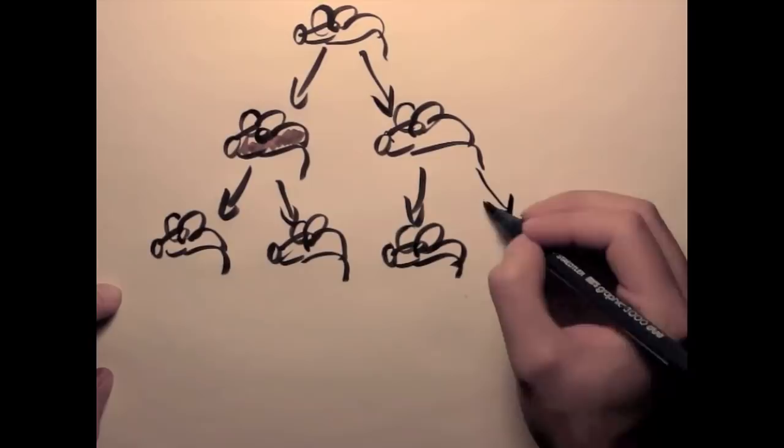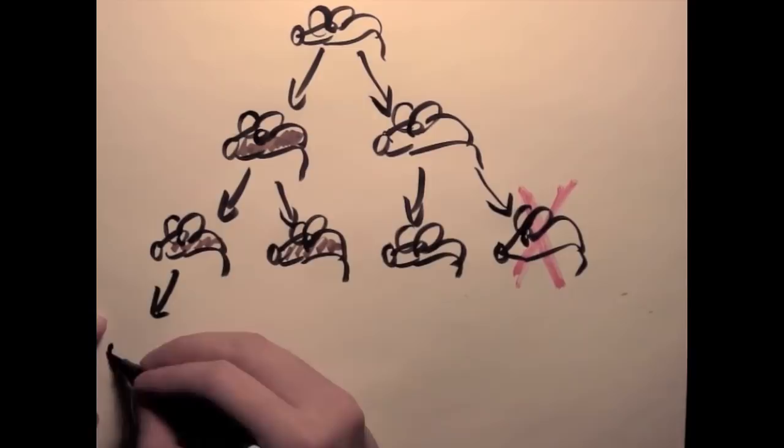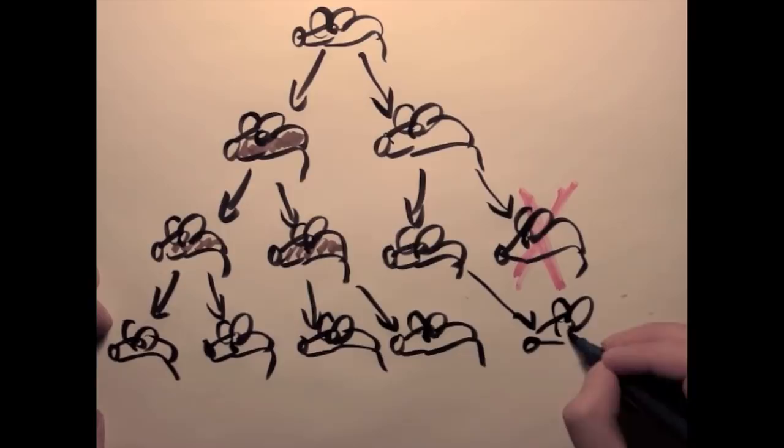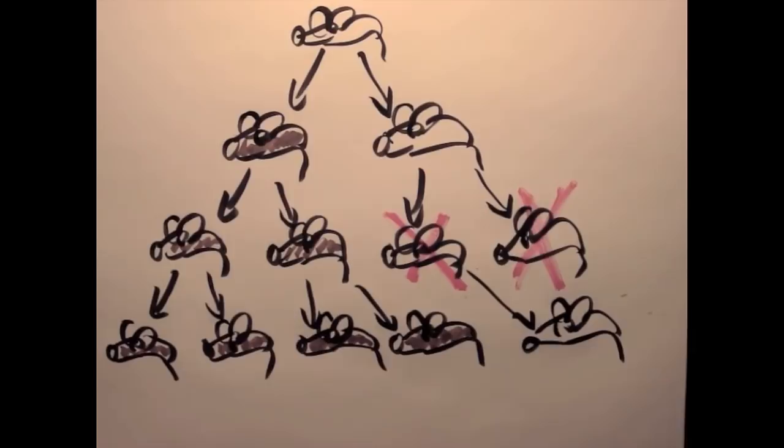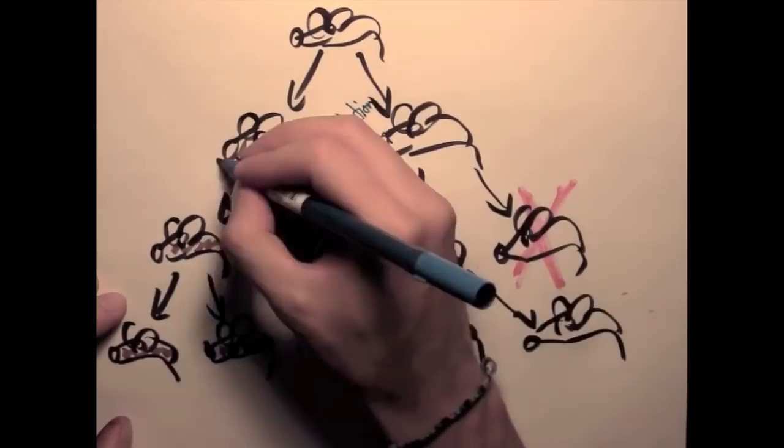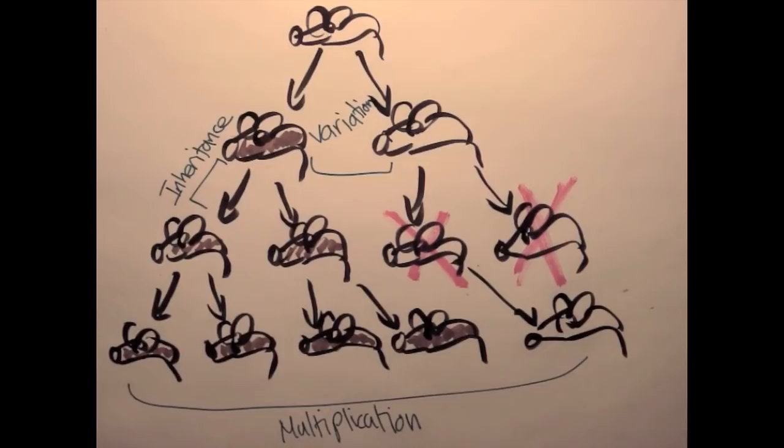After a few generations, there are many more surviving brown mice than white mice because natural selection has caused the mouse population to adapt to the environment. Going back to the properties we learned before, the variation here is created by the changes in genes that create the two colors. The inheritance means white mice make mostly white offspring and brown mice make mostly brown offspring. Producing offspring already satisfies multiplication.